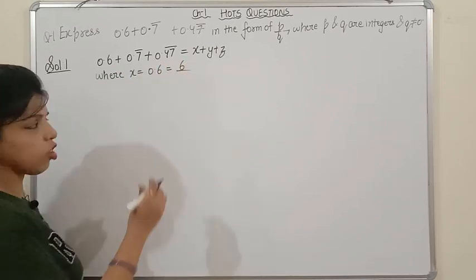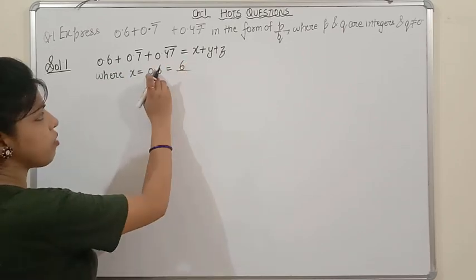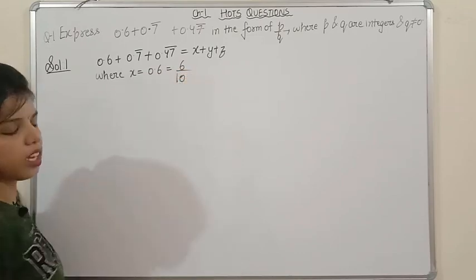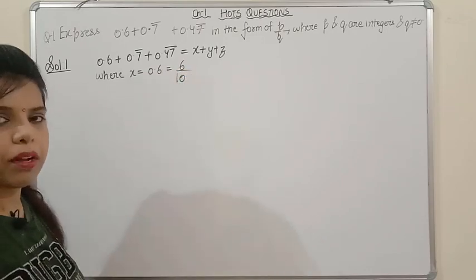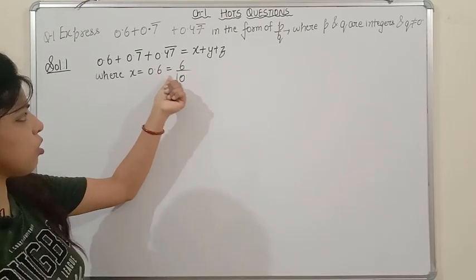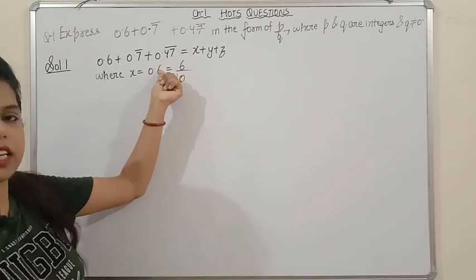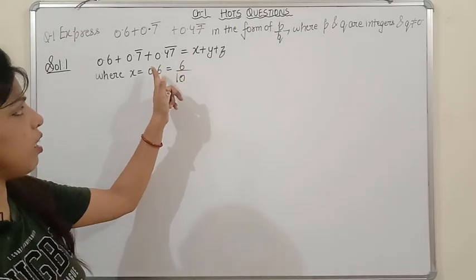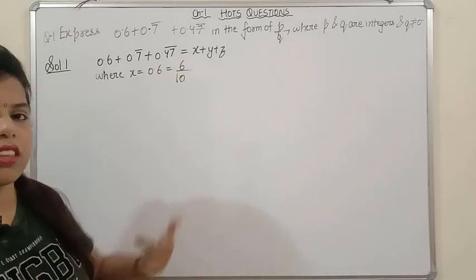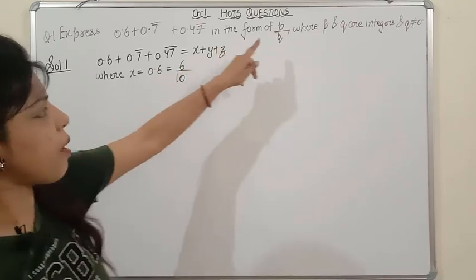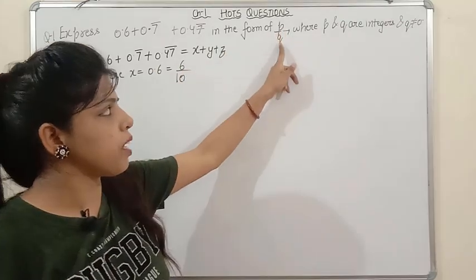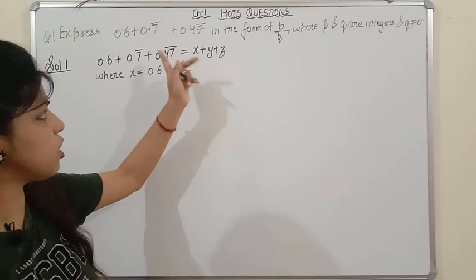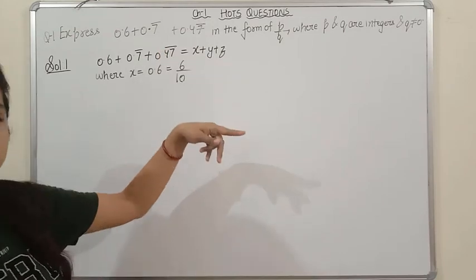First, x = 0.6. Since there is only one digit after the decimal, we can directly write x = 6/10. You know that if there is one digit after the decimal, the denominator is 10; if two digits, denominator is 100; if three digits, denominator is 1000. So x is easily expressed in p/q form. Similarly, we will change y and z to p/q form.